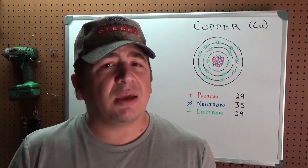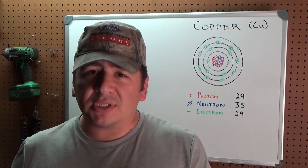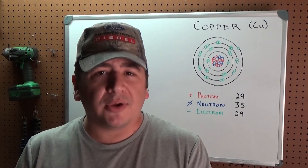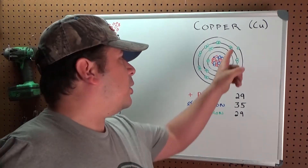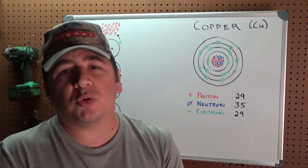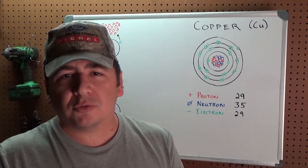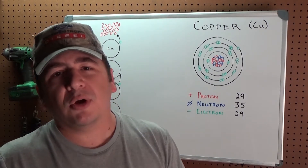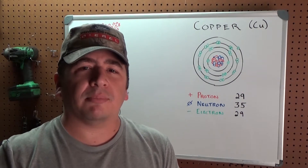For our example we're going to use a copper atom for two reasons. One, because most automotive wiring is made out of copper, and two, because very conveniently it has one electron in its outermost shell. It makes it very easy to show demonstrations using copper because you just have one electron floating out there that you can throw off onto another atom.